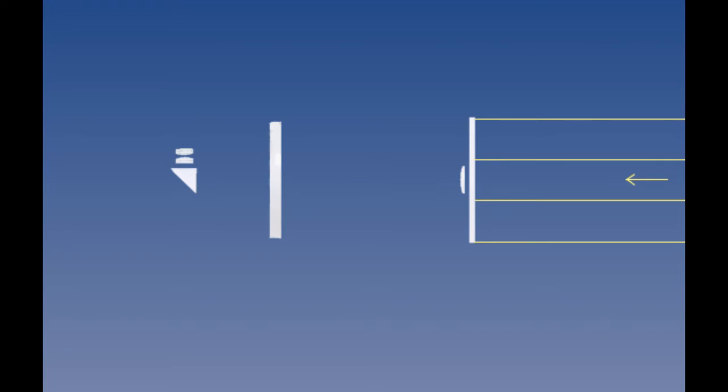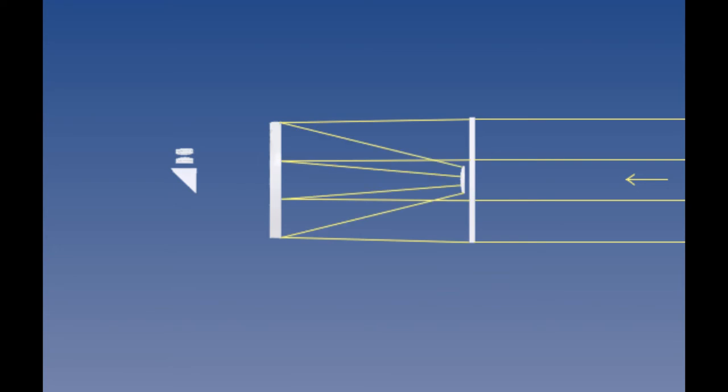Now let's look at the light path of a catadioptric scope. Since the light path works basically the same for all catadioptrics and Cassegrains, we're using the diagram for a Schmidt-Cassegrain to demonstrate. Light enters the scope at the front, bounces off the primary, then strikes a secondary mirror. This secondary then folds the light again to cause the light cone to eventually come out the back through a hole in the primary mirror. All of these folds in the light path count in measuring the focal length, and the convex nature of the secondary gives the focal length a big boost.